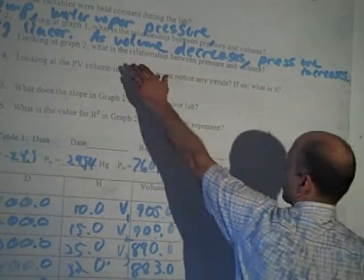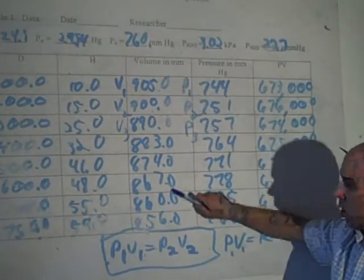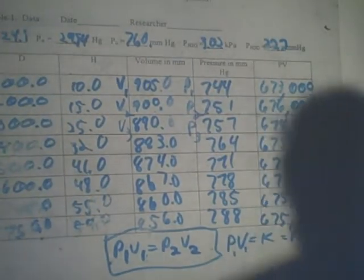It would be a little bit more correct to write this in terms of your independent variable because which variable were we changing? Pressure. No, we are changing the volume and measuring the pressure. It would be a little bit more correct to say as volume decreases, pressure increases. Because we are changing the volume and then measuring the pressure.